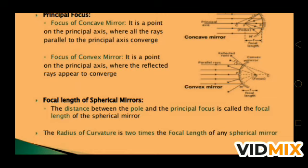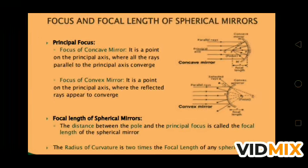The focal length is the distance between the pole and the principal focus of a spherical mirror. The radius of curvature is 2 times the focal length of any spherical mirror. So if the radius of curvature is 10 cm, the focal length is 5 cm. That is: f = R/2, where R is the radius of curvature.